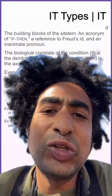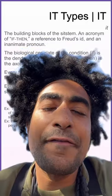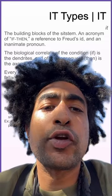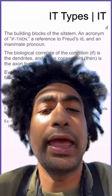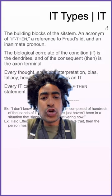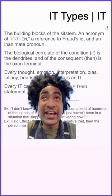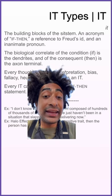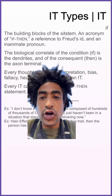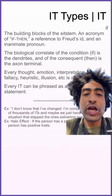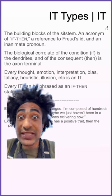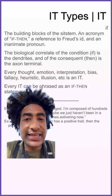It types 'it': the building blocks of the sit stem, an acronym of 'if-then,' a reference to Freud's id. No way — I just said 'Freudo' — and an inanimate pronoun. Biological correlate of the condition: 'if' is the dendrites, and of the consequent 'then' is the axon terminal. Every thought, emotion, interpretation, bias, fallacy, heuristic, illusion, etc. is an 'it.'